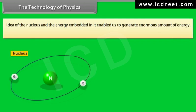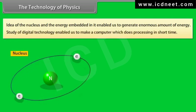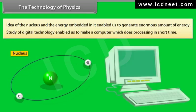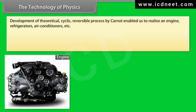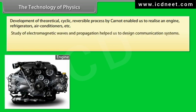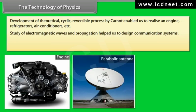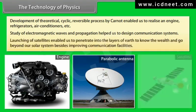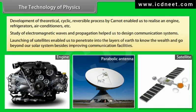The technology of physics: the idea of the nucleus and the energy embedded in it enabled us to generate an enormous amount of energy. Study of digital technology enabled us to make computers which do processing in a short time. Development of the theoretical cyclic reversible process by Carnot enabled us to realize engines, refrigerators, air conditioners, etc. Study of electromagnetic waves and propagation helped us to design communication systems. Launching of satellites enabled us to penetrate into the layers of Earth, know the wealth of Earth, and go beyond our solar system, besides improving communication facilities.